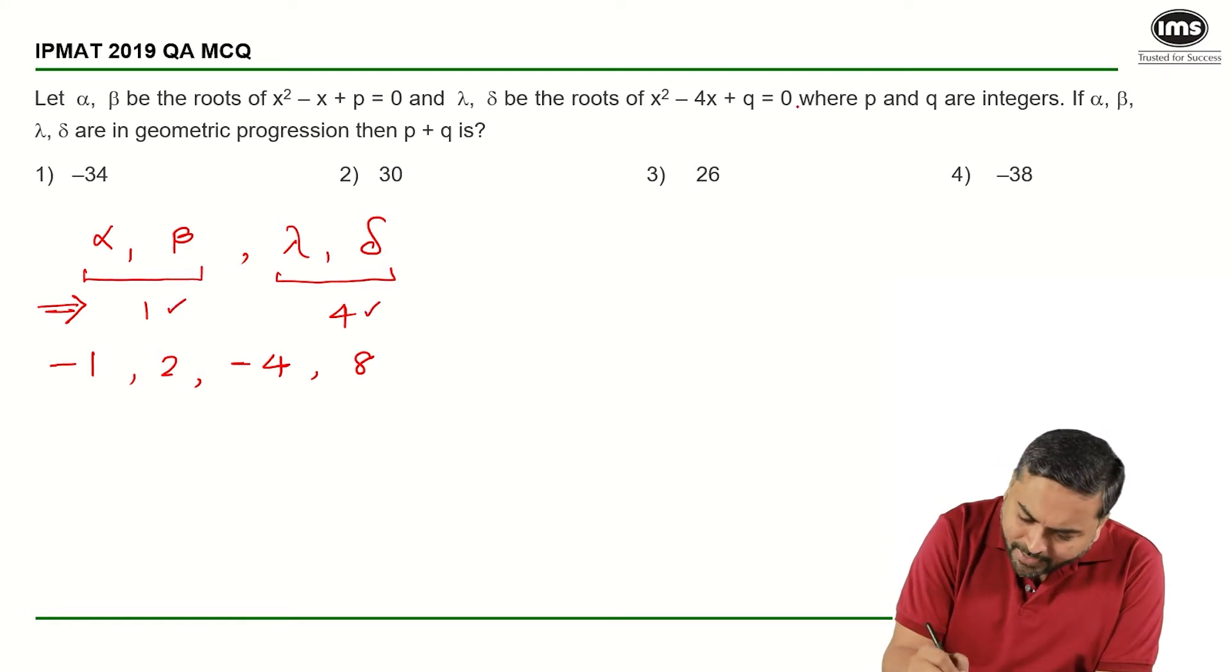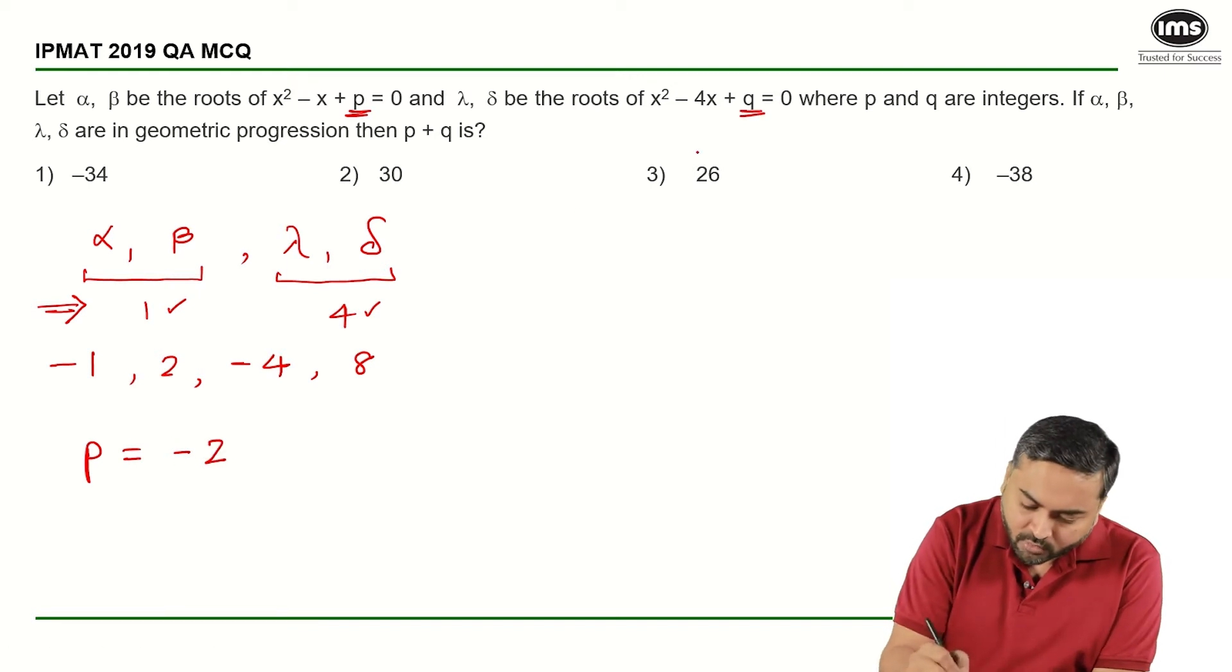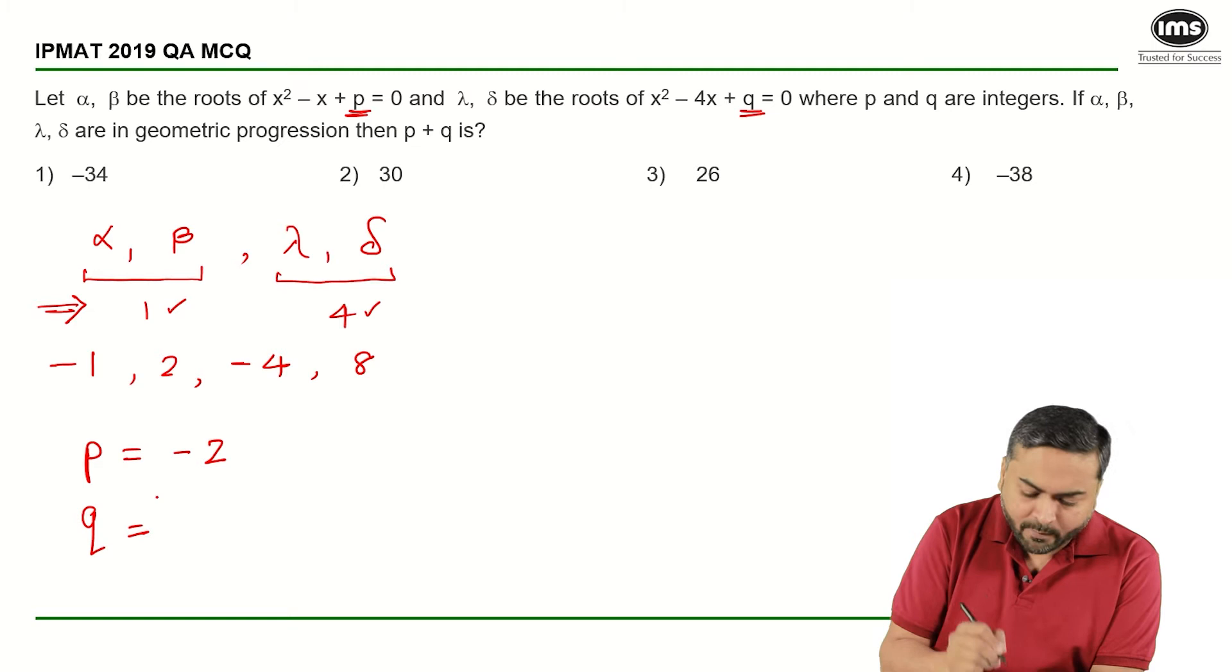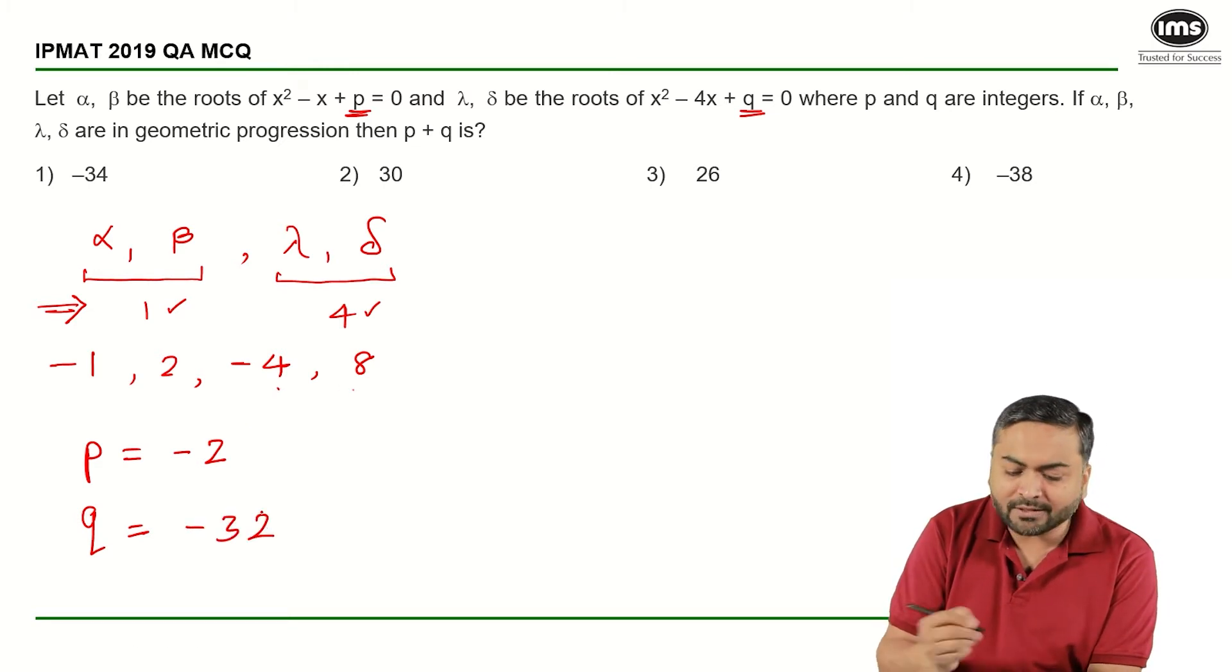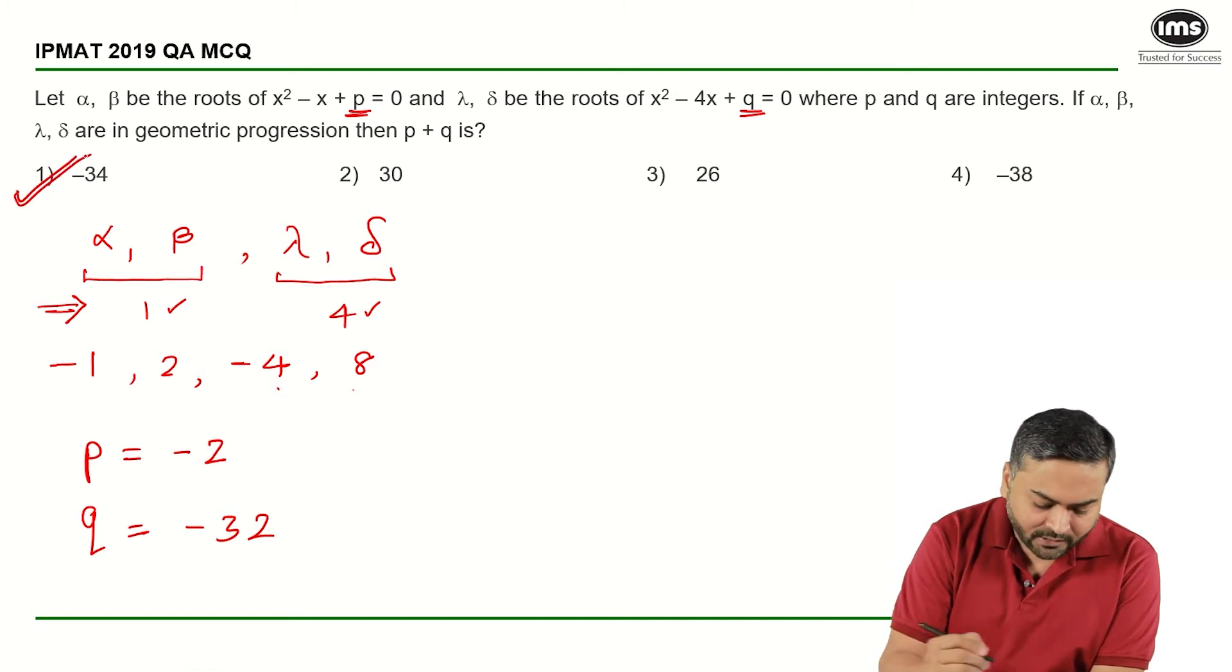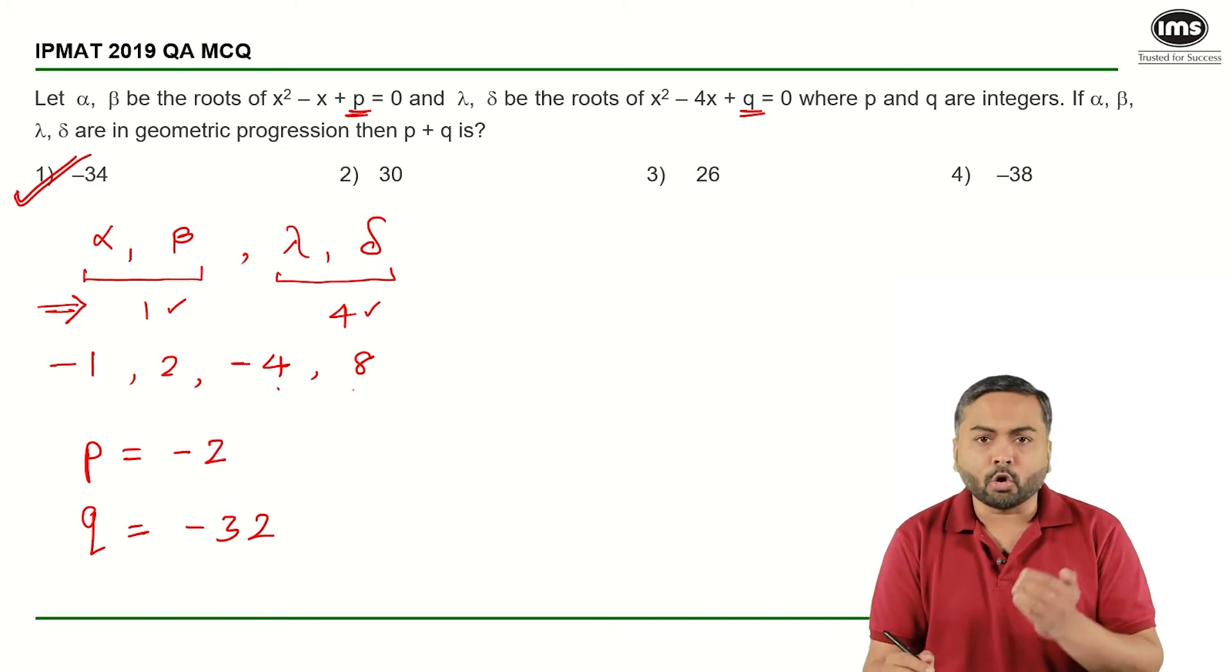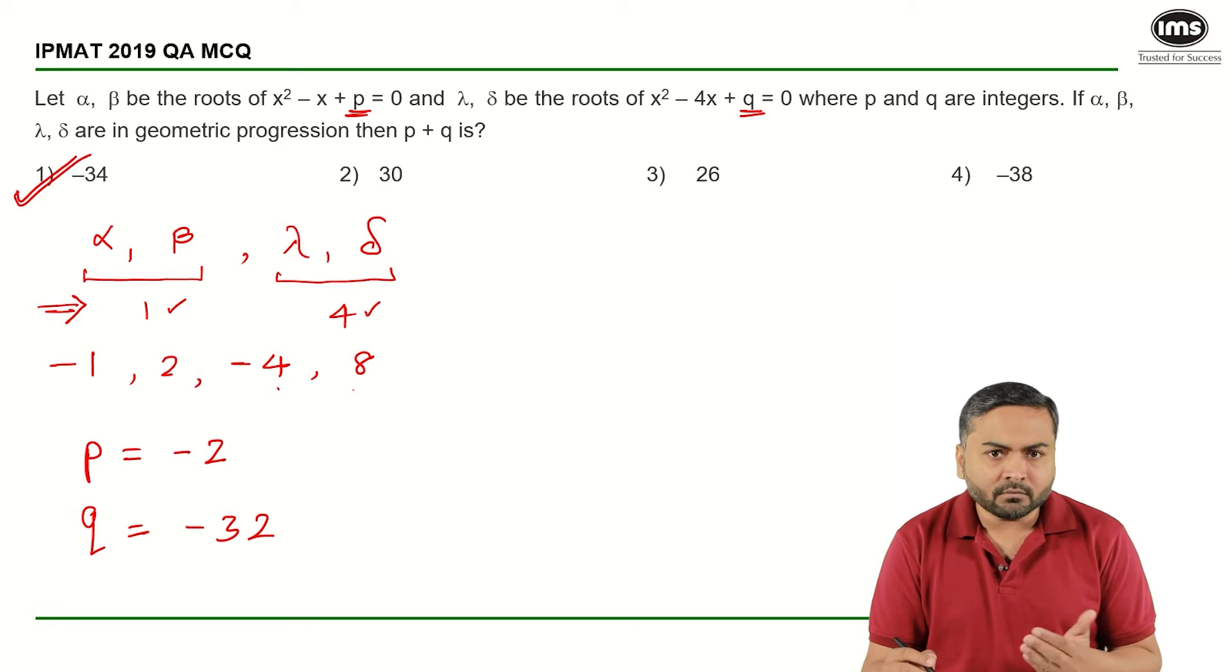What is my P here? P is product of the roots. So P will be minus 1 into 2, that is minus 2. And what is Q? Q will be minus 4 into 8, that is minus 32. The sum is minus 2 and minus 32, that adds up to minus 34, and that is the right answer without actually solving the equation formally. We could have started with the numbers and arrived at the right answer.